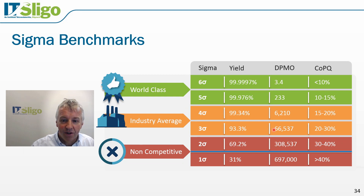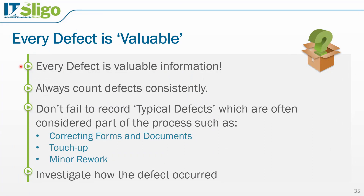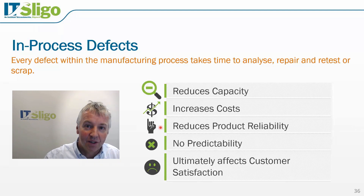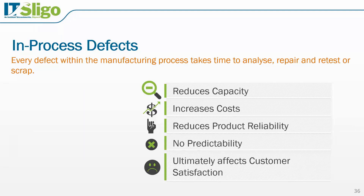Moving from three Sigma to six Sigma doesn't make you twice as good — it makes you 20,000 times better in DPMO terms. It's important that every defect is recorded as valuable information, because your quality system exists to prevent defects. Think of it like a prison camp: when one escapes, you can learn a lot. You must record typical defects often considered part of the process — form corrections, touch-ups, minor rework — because measuring them lets you investigate causes. Every defect affects capacity, financial metrics, and customer predictability.